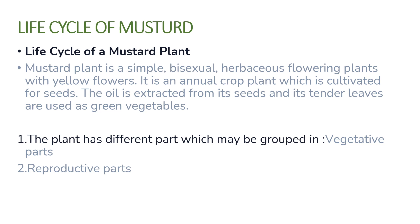There are two categories of plant parts. The first is the vegetative parts, which include root, stem, and leaves. The second is the reproductive parts, which include the flower.